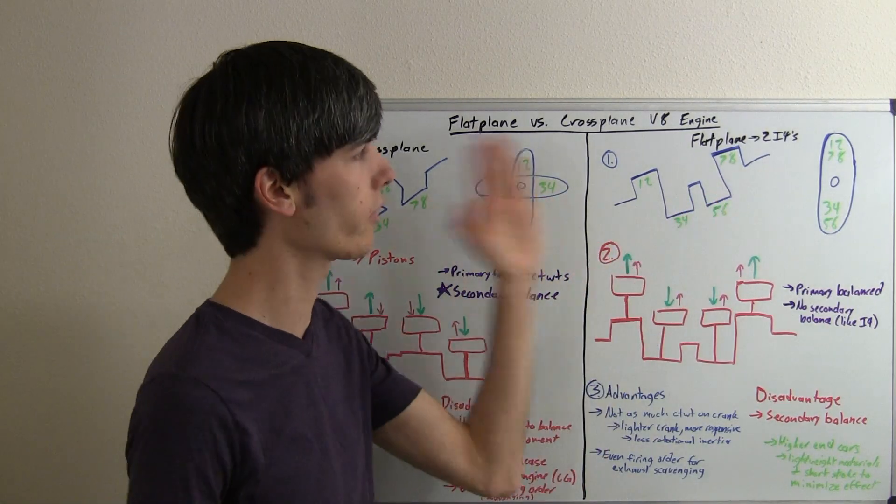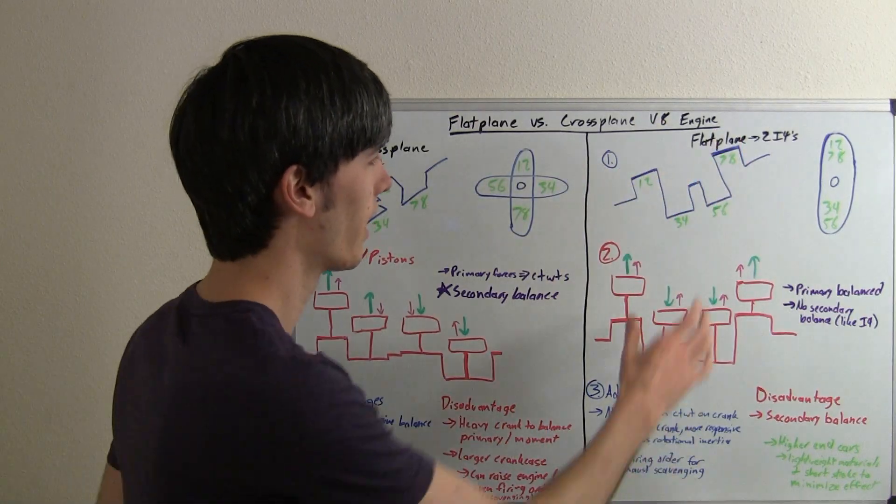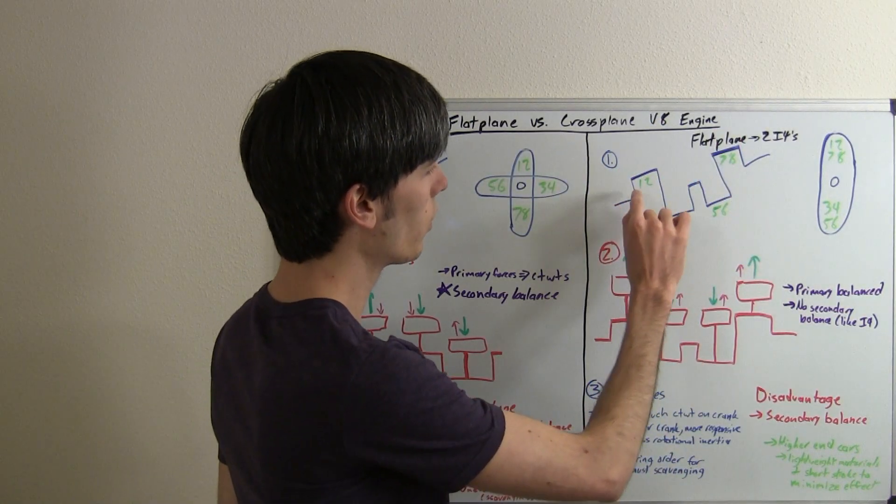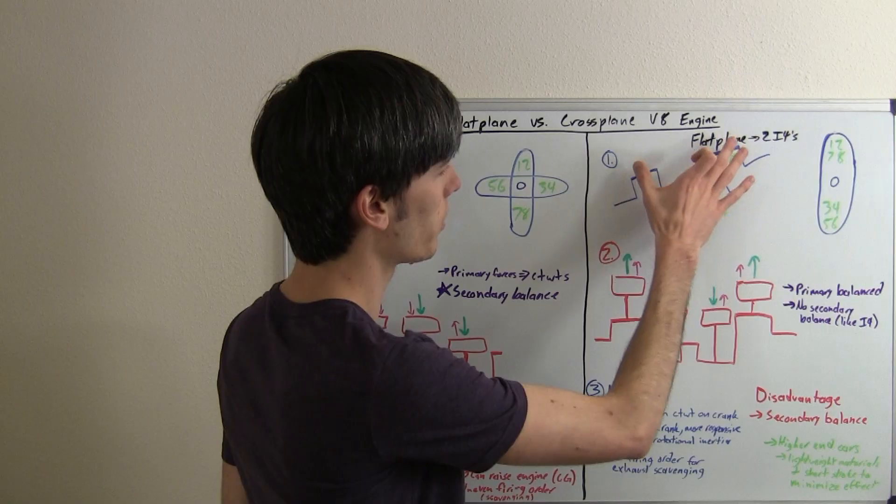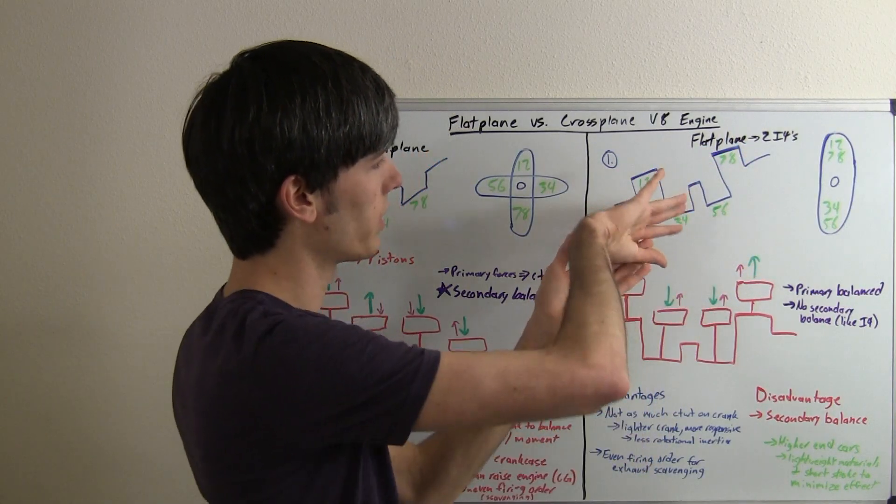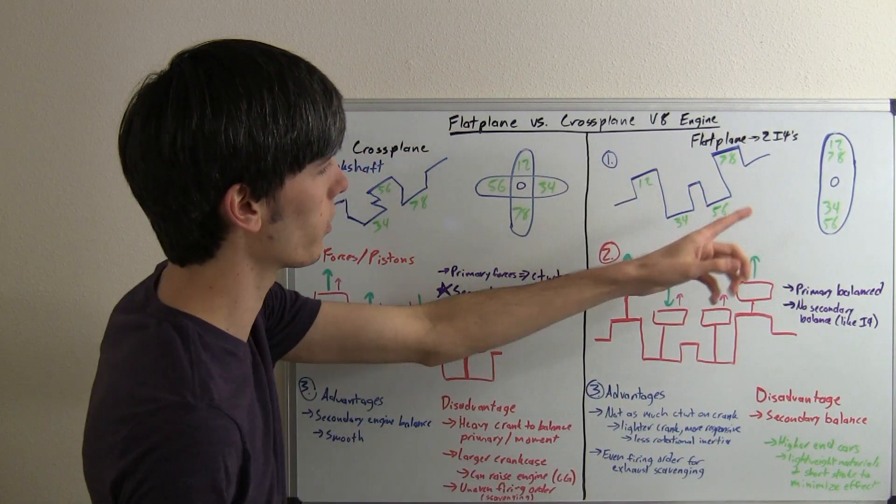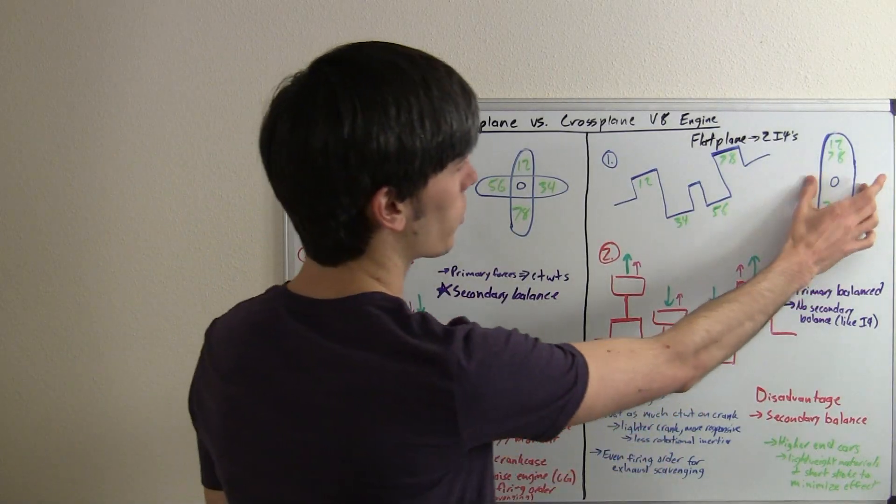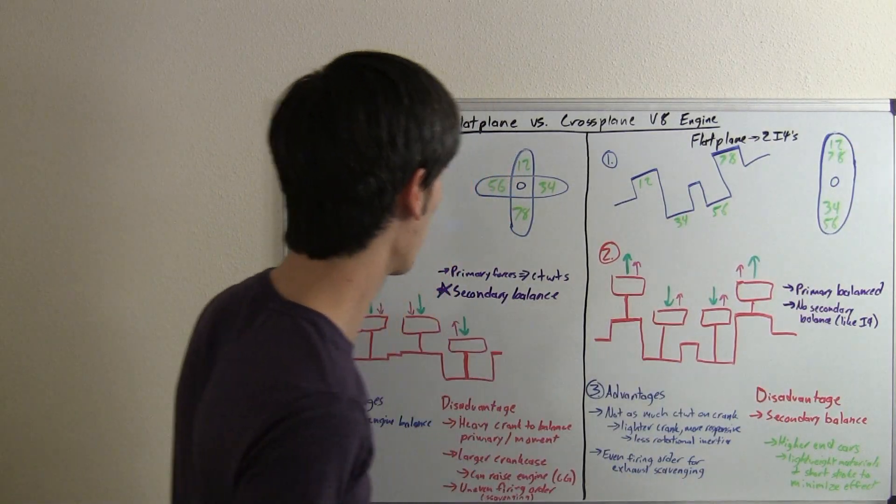Now with a flat-plane V8, everything's going to be in a flat plane, hence the name. So we've got 1 and 2, 7 and 8, which are going to be up high, and then 3 and 4, 5 and 6, which are going to be down low, and then this will simply rotate and those will change. So that's what it'll look like looking onto the crankshaft.